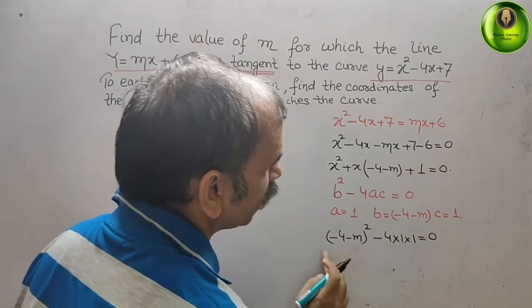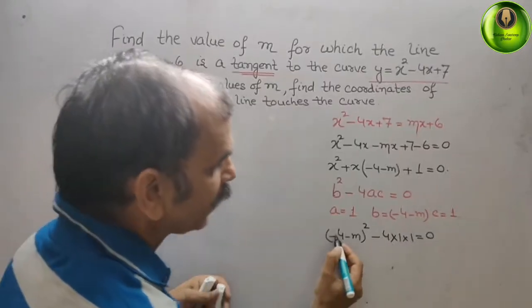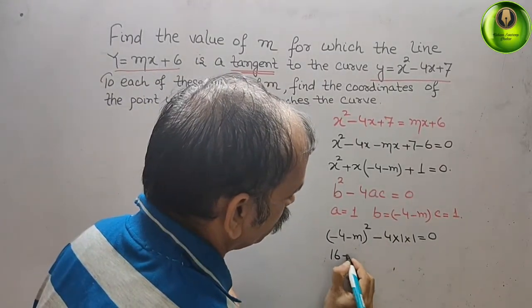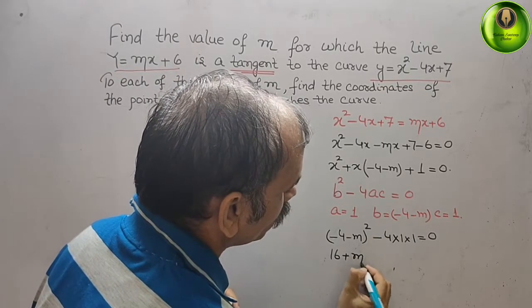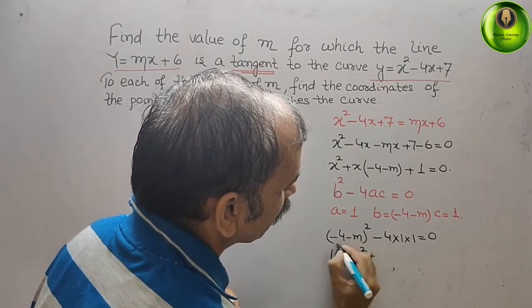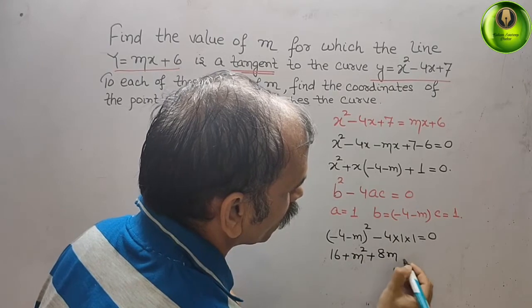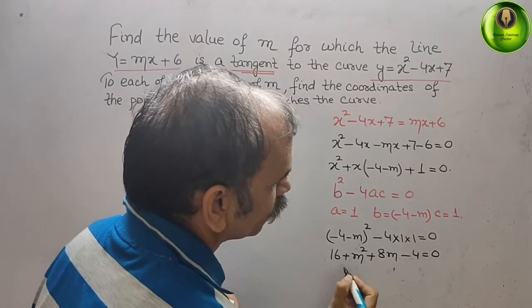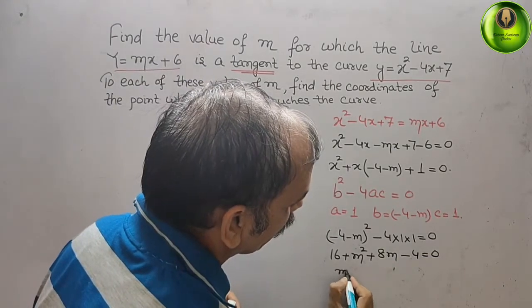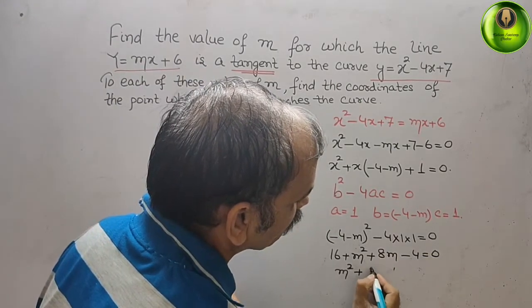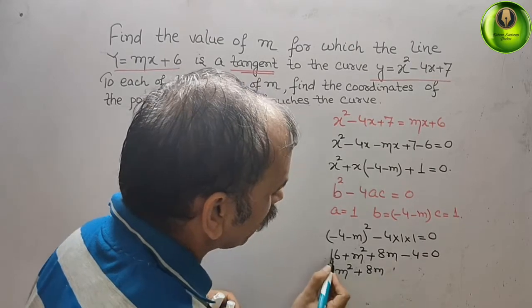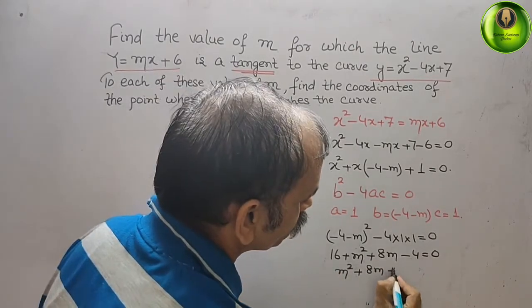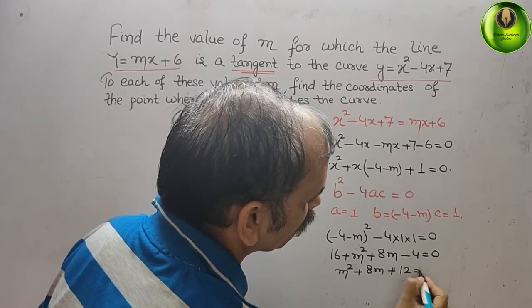Expanding: (-4 - m)² = 16 + m² + 8m. So we get: m² + 8m + 16 - 4 = 0, which simplifies to m² + 8m + 12 = 0.